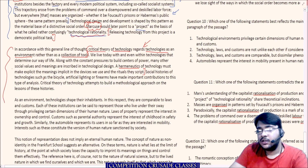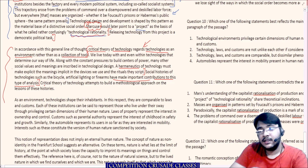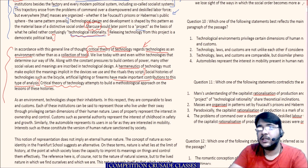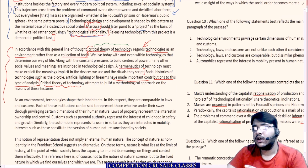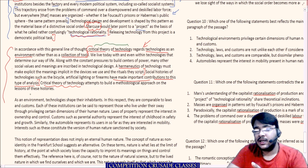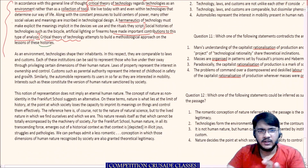Social histories of technologies — such as the bicycle and others — have made important contributions to this type of analysis. Critical theory of technology attempts to build a methodological approach on the lessons of these histories. So note: critical theory of technology regards technology as an environment, and it attempts to build a methodological approach on historical lessons — both are anchor lines we can return to.